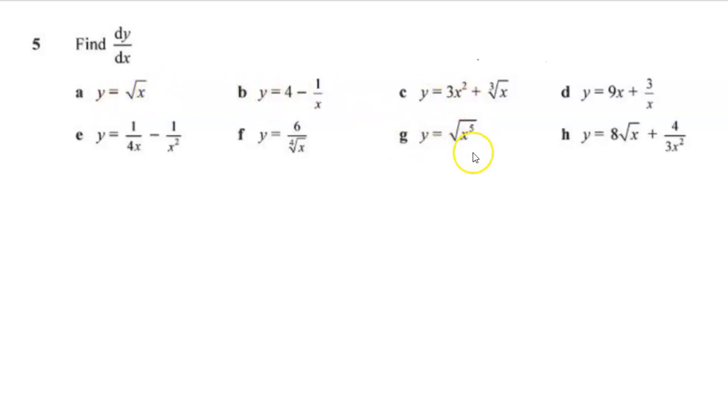Let me just pick up a question. If I do question number H, it has all the variables, so you'll be able to do the other ones. Let's start with question H. For question H, I got y equals 8 root x plus 4 over 3x squared.